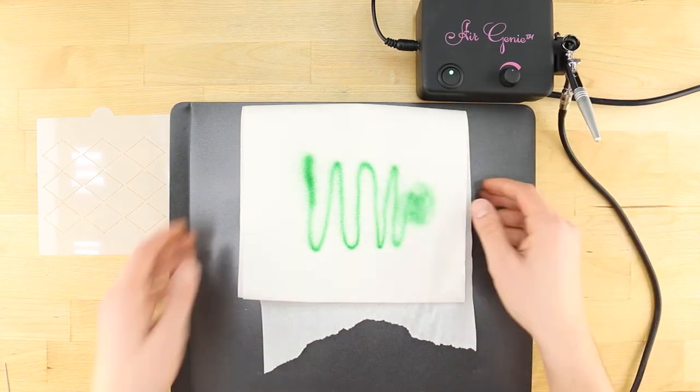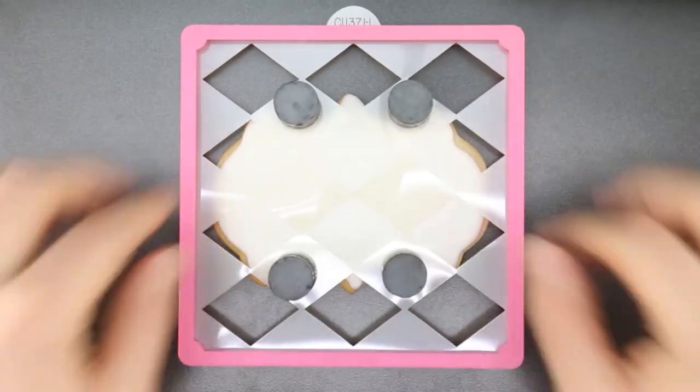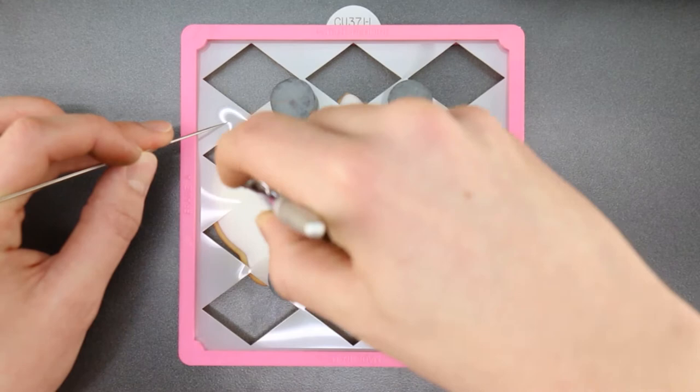Then test the airbrush on a piece of paper towel. As you airbrush, use a spare needle to hold the stencil flat to the cookie surface.